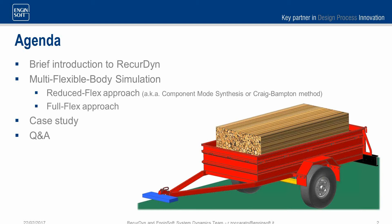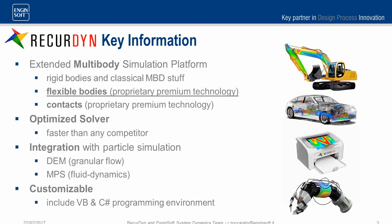Recurdyn is a software for simulating the dynamics of rigid multi-body systems, like many other tools available on the market, but with many more special capabilities. Recurdyn can simulate flexible bodies and also contacts between flexible bodies like no one else can, thanks to its unique technology. It is also faster than any other competitor because of its optimized solver.